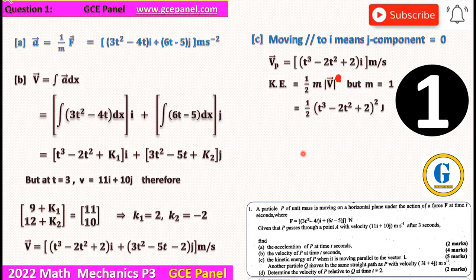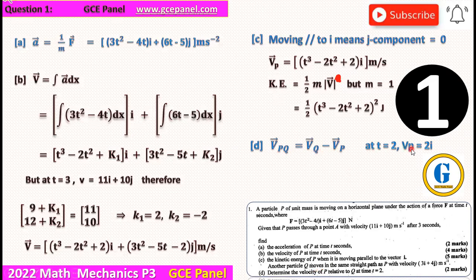So for the D part, another particle Q moves along the same straight path as P with velocity 3i plus 4j meters per second. Determine the velocity of P relative to Q at t equals 2 seconds. So the velocity of P relative to Q will be equal to velocity of Q minus velocity of P at t equals 2. And when t is equal to 2, our velocity of P will just be equal to 2i.